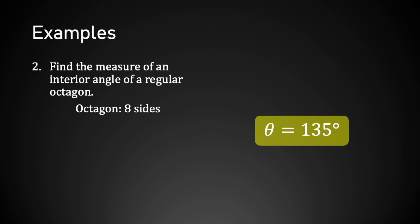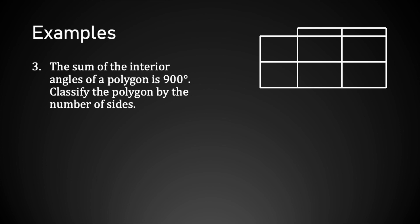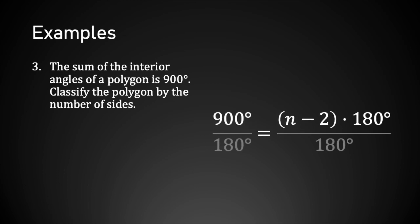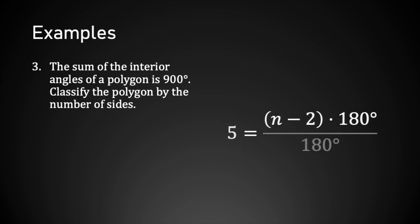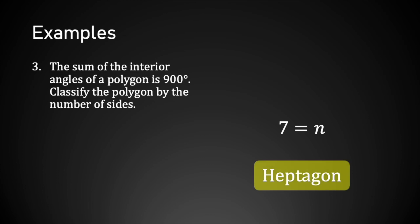In examples 3 and 4, we're given the angles and have to find the sides. Example 3: the sum of the interior angles of a polygon is 900 degrees. Using the interior sum formula, I replace θ with 900 degrees, then divide both sides by 180 degrees. 900 divided by 180 is 5, leaving 5 = n − 2. Adding 2 to both sides gives n = 7. The question asks to classify the polygon, and a polygon with 7 sides is called a heptagon.